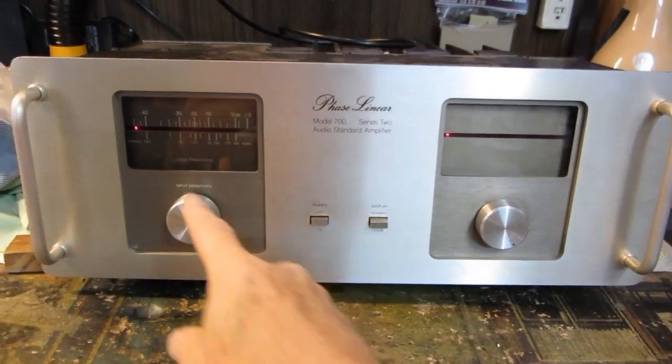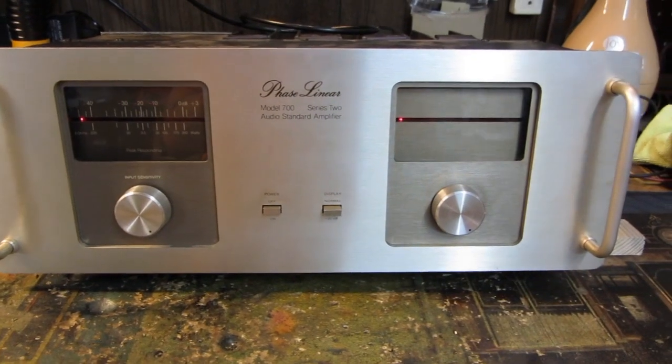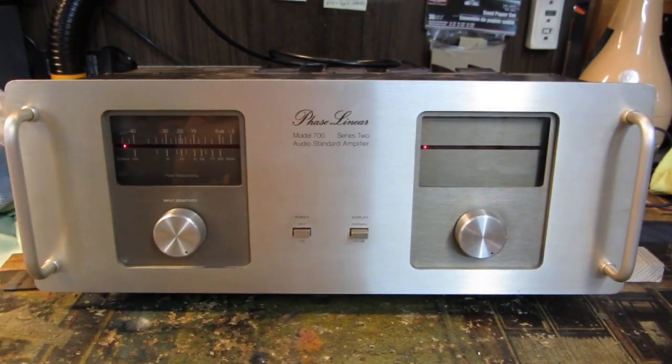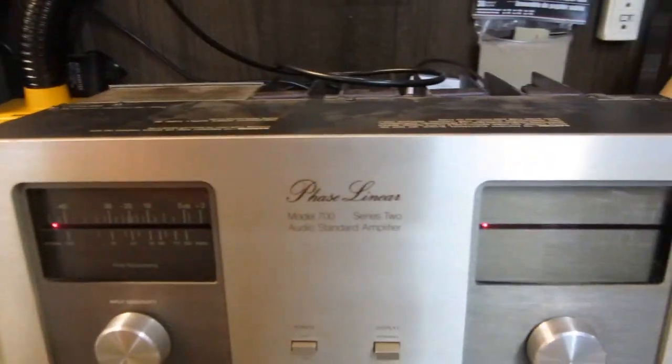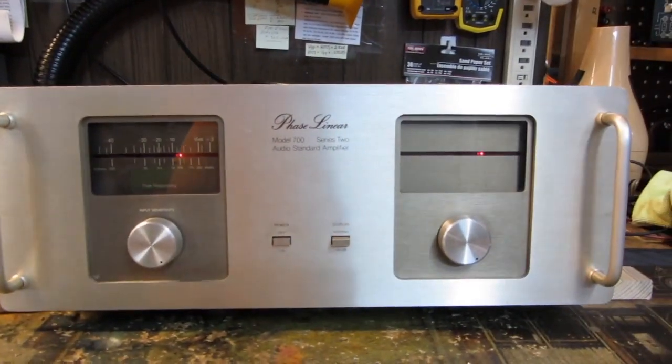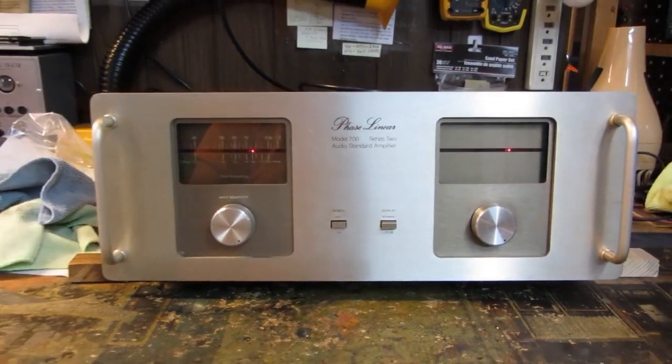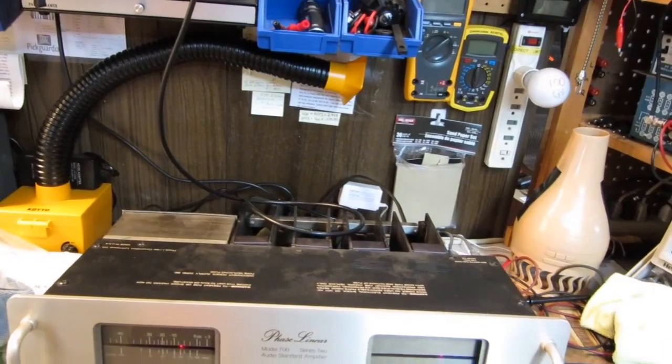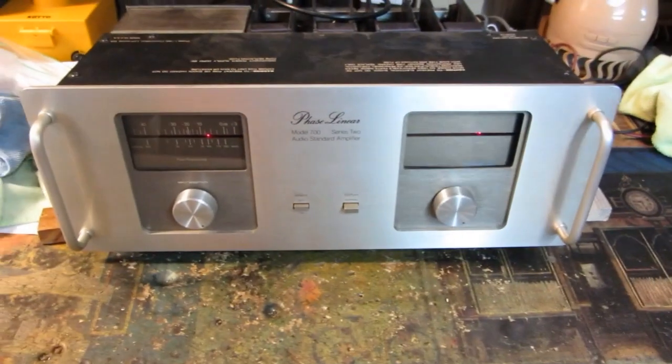It's all back together. And as you see, the displays are both now reading zero as they should. And I'll go ahead and put a signal into it real quick. So there you go. Easy repair on a Phase Linear 700 Series 2 audio amplifier. They had a malfunctioning peak meter.